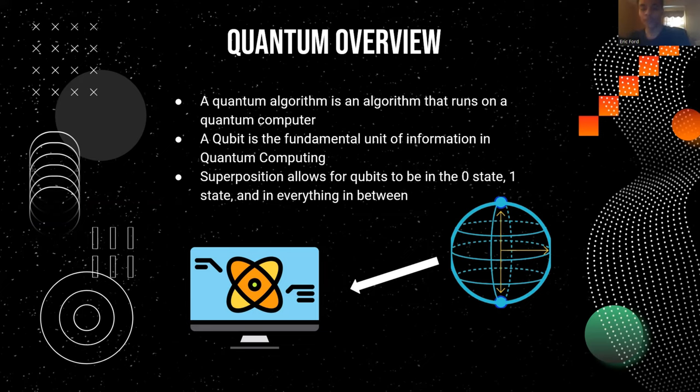It's like a classical bit. It takes advantage of superposition, which allows for the qubit to be in a zero state, a one state, and everything in between. But why is this useful? It's because quantum computers speed up tasks that would take forever on a regular computer.